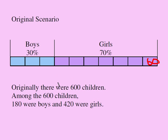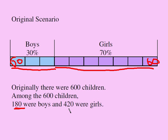Each chunk has a value of 60. That means I have 180 boys — 60 times 3. And if I multiply 60 by 7, I'll have 420 girls. So originally there were 180 boys and 420 girls, and altogether there were 600 children.